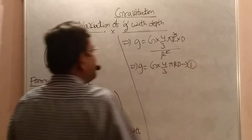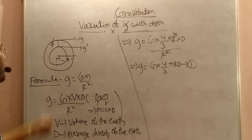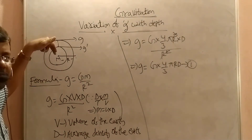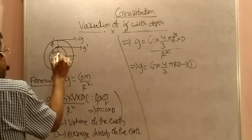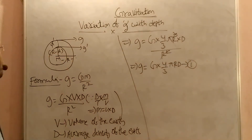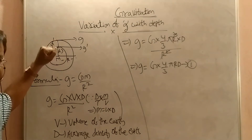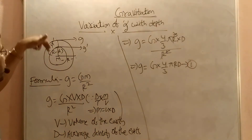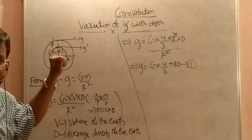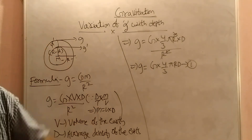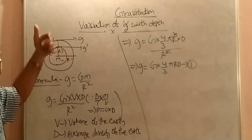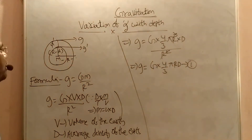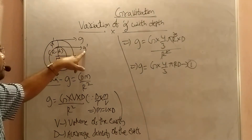After cancelling R squared with R, we finally get g equals G into 4 by 3 pi R D. This is equation 1. Now, when I am going to some depth d, the radius becomes R minus d. When we are on the surface of the earth, more mass is attracting. When going down, less mass attracts. If mass is less, attraction is also less, so acceleration due to gravity decreases.